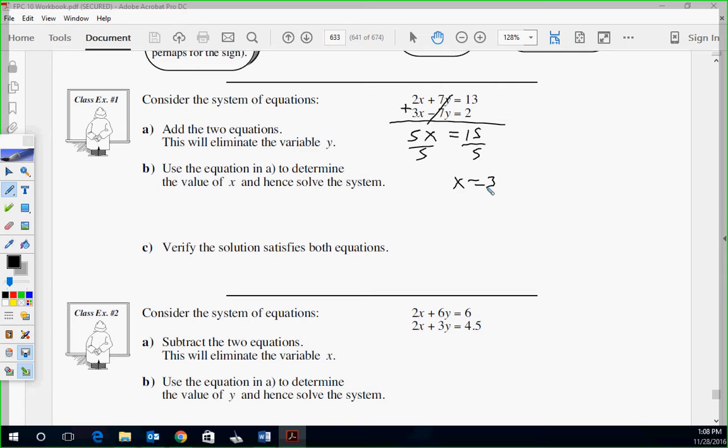So we got that. So we solved. x is 3. No problem. Verify. Well, we've got to figure out y real quick. To figure out y, you just plug into each one. It doesn't matter which one. So I'll go 2 times 3 plus 7y equals 13. 6 plus 7y equals 13. y is 1. Okay. Questions there?